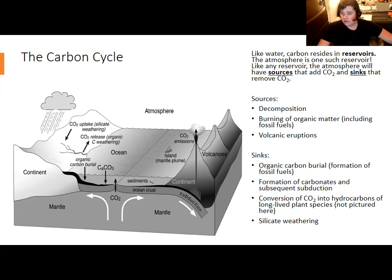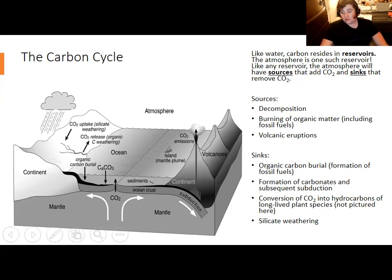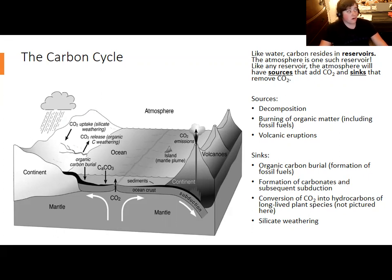The main sources of CO2 in the atmosphere are the decomposition of dead matter and when organisms eat other organisms, because that produces CO2 via cellular respiration. Also the burning of organic matter — wildfires as well as burning of fossil fuels — and volcanic eruptions, which emit CO2 among the various gases. The bubbles you see in lava are formed by gases escaping, including CO2.